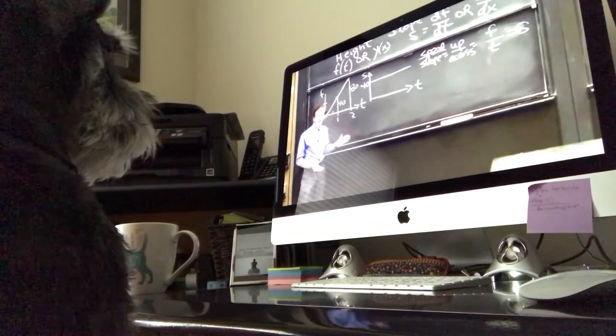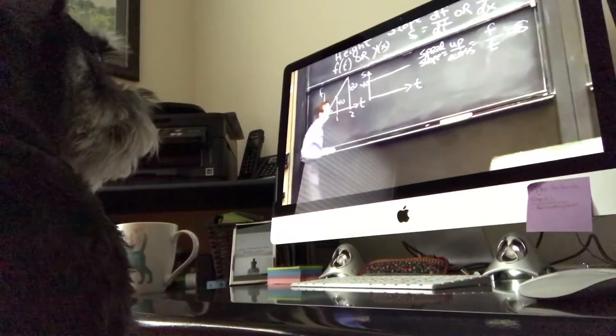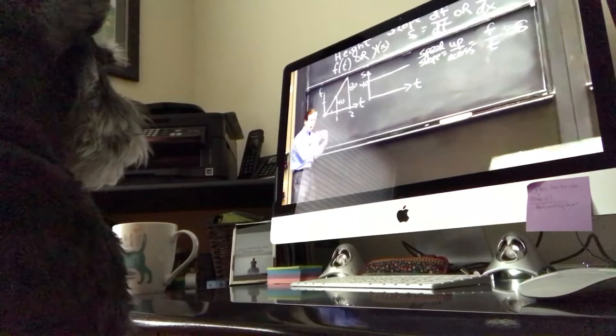What about calculus goes both ways? We can go both ways here. We already have, practically. Here, I went in the direction from 1 to 2. Now I want to go in the direction, suppose I know the speed, how do I recover the distance?